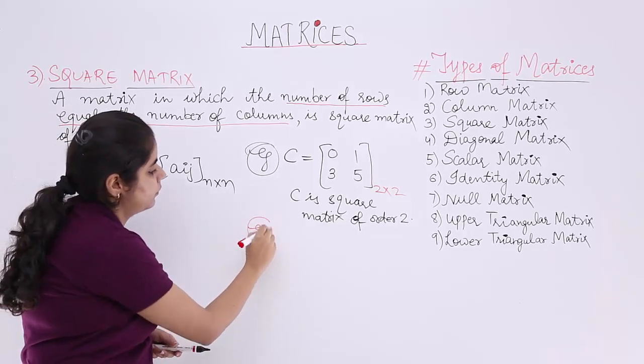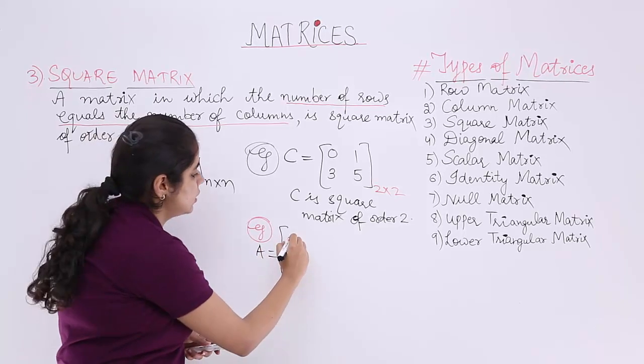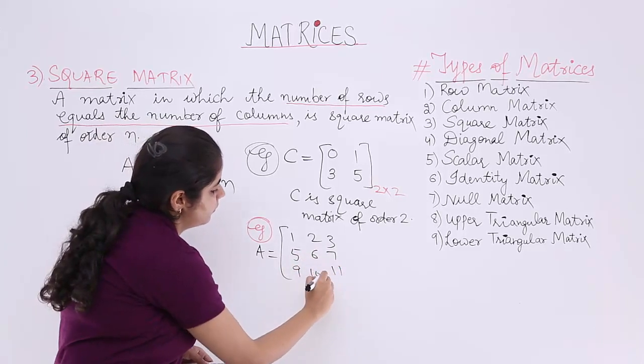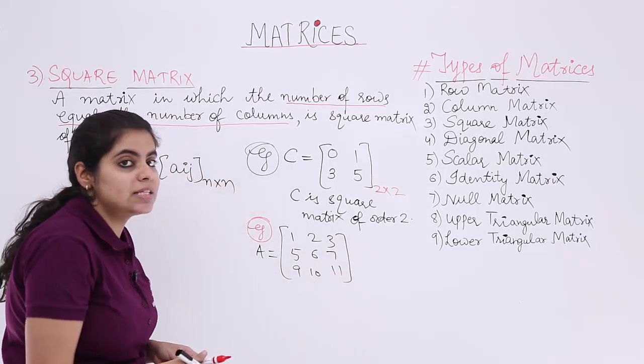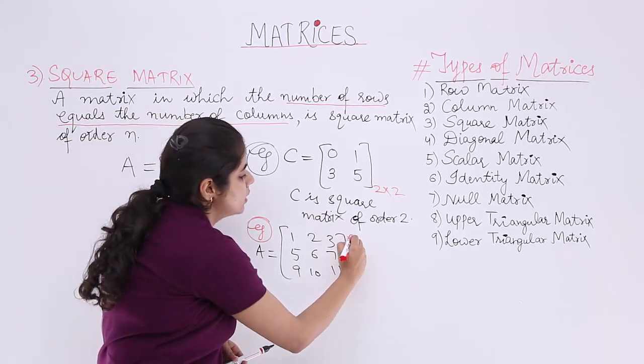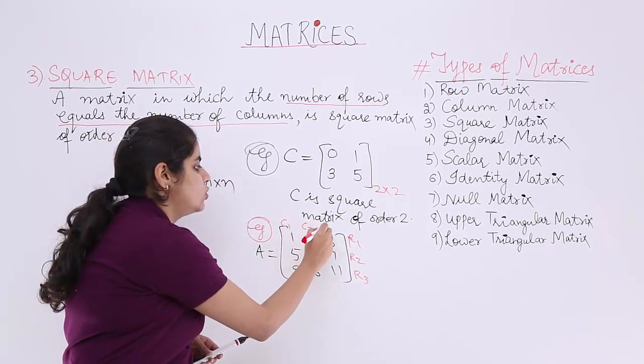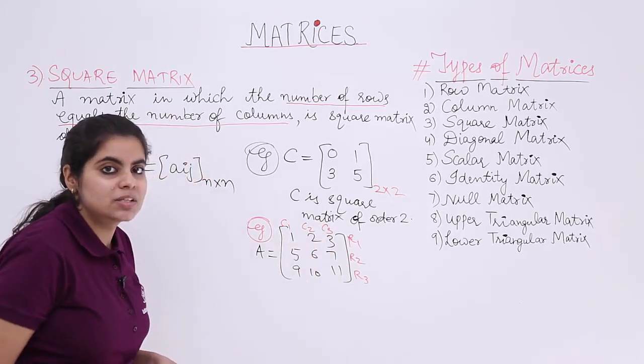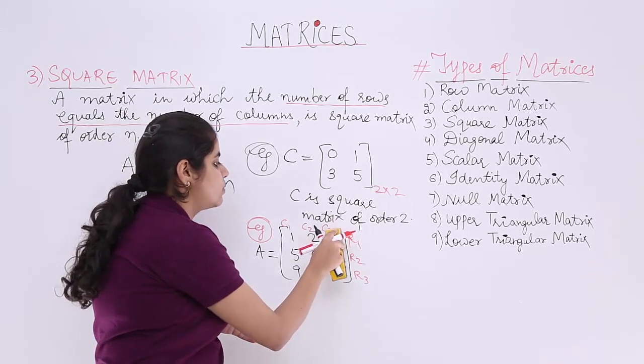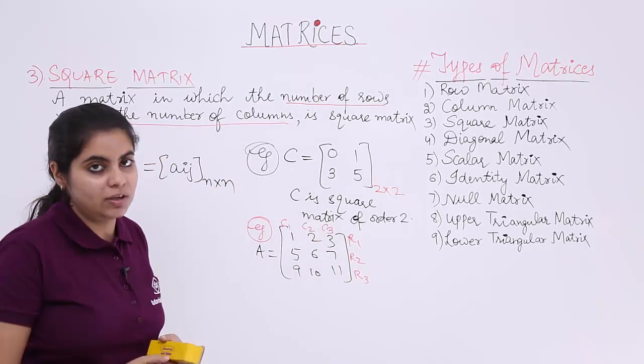Let's take another example. Another example would be a matrix A such that it is something like this. There are how many elements? There are 9 elements. There are how many rows? 3 rows, 3 columns. If not understood: R1, R2, R3 are the 3 rows and C1, C2, C3 are the 3 columns. So when we have 3 rows and 3 columns, that makes it a square matrix of the order 3.